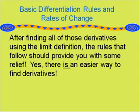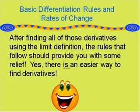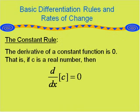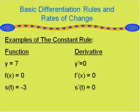Now let's take a look at basic differentiation rules and rates of change. After finding derivatives using the limit definition, the rules that follow should provide some relief — yes, there is an easier way to find derivatives. The constant rule says that the derivative of a constant function is 0; that is, if c is a real number, then the derivative of c equals 0.